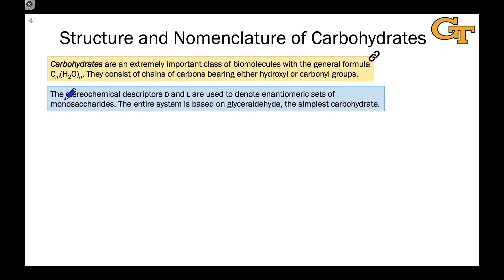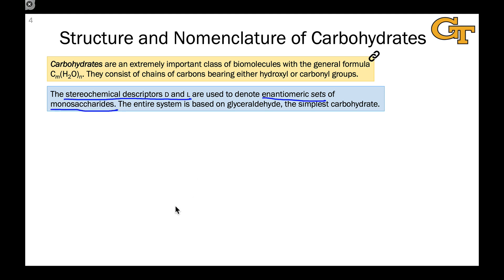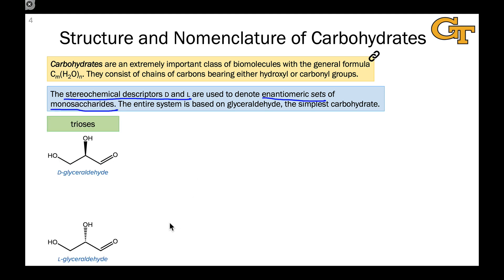Let's talk about the stereochemical descriptors D and L, which are used in a biochemical context to refer to enantiomeric sets of molecules — in this context, monosaccharides. The entire system of D and L is based on glyceraldehyde, the simplest carbohydrate.